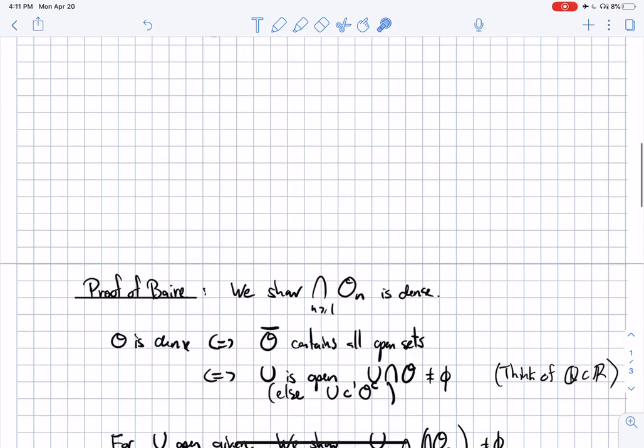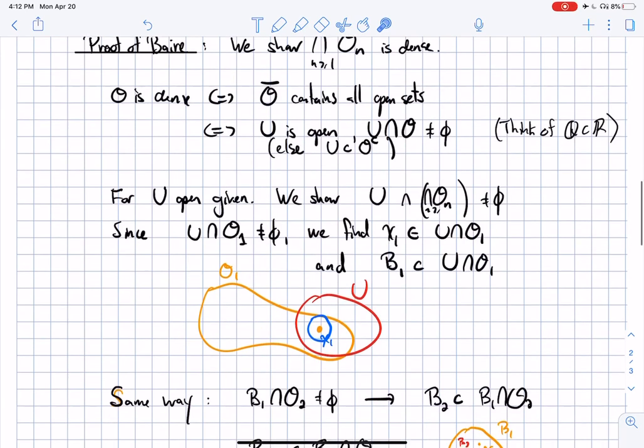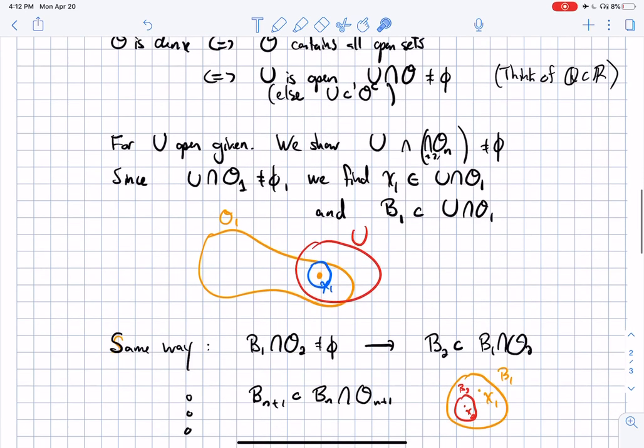We show a stronger statement: the intersection of open sets is dense. Another way to say it, which might be better, is that if you take any open set, then the intersection must be non-empty. Think of it as the density of rationals in R. In any open set, I can find some rationals. So if O is dense, I take any open set, the intersection with O is non-empty.